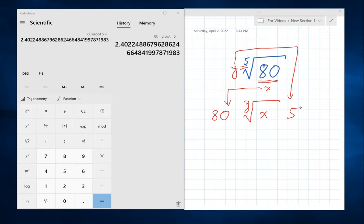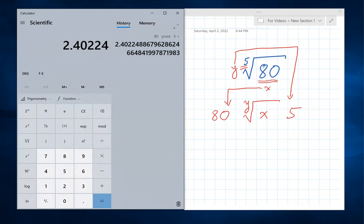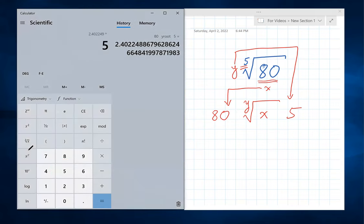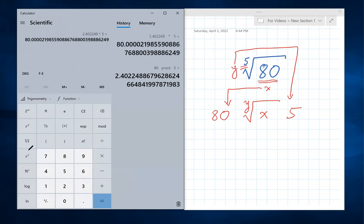Let's double check by raising this number to the fifth power. 2.402249. Let's round 488 to 49. Raise to power. Here's the power key, x to the y. Press that key, then 5. Equals. Yep, 80.